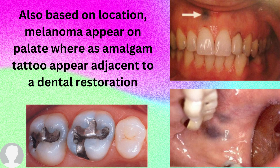Another way to differentiate is based on location. Melanoma appears on the palate, whether soft or hard palate, whereas amalgam tattoo appears adjacent to a dental restoration, as you can see in the picture.